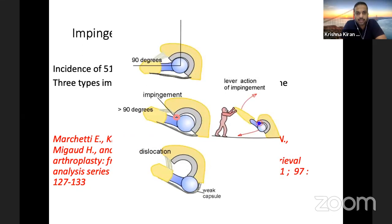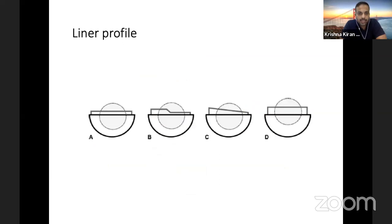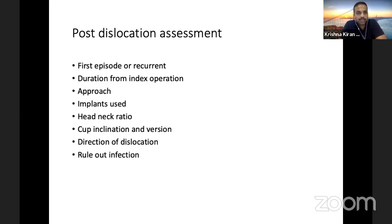Regarding liner profile, people are tending to use more neutral liners, but the literature has shown that an elevated lip liner is associated with a lower risk of instability. In high-risk patients, it is always a good idea to use a lip liner. Despite best efforts, if dislocation has happened, the post-dislocation assessment must determine whether this is a first episode or recurrent, the duration from index operation, whether it's early or late dislocation due to polyethylene wear, what approach was used, whether augmented repair was done, the implants used, head diameter, head-neck ratio, cup inclination and anteversion.